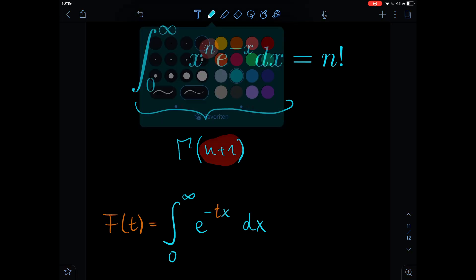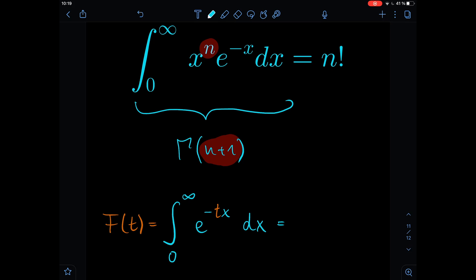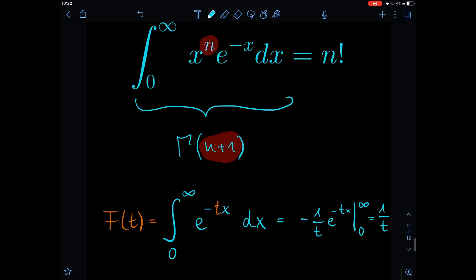Alright, now we have our integral. Now we can integrate it with respect to x, and we're treating t as a constant, and this will give us, so the antiderivative of e to the power of minus tx is minus 1 over t e to the power of minus tx, and the whole thing gets evaluated at infinity and 0, and this is just 1 over t.